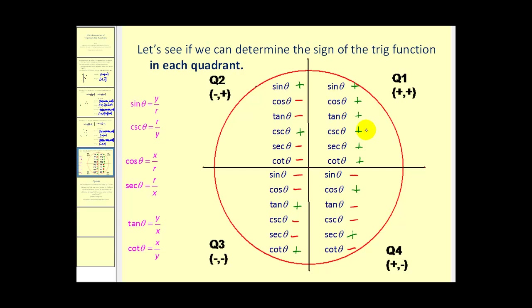This explains why each trig function is positive or negative in each quadrant. There are some acronyms that can help in remembering these. For example, ASTC stands for 'All Students Take Calculus.' A means all trig functions are positive in the first quadrant. S means sine and its reciprocal are positive in the second. T means tangent and its reciprocal are positive in the third. And C means cosine and its reciprocal are positive in the fourth. You could also think of this as the word ACTS.